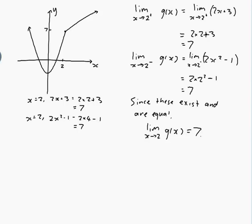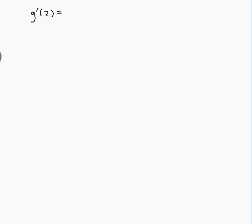Now let's look at g'(2). g'(2) is defined as a limit — the derivative is actually defined to be a limit. So g'(2) is equal to the limit as h approaches 0 of g(2 plus h) minus g(2), all over h. Because g is defined differently when we're above 2 or below 2, g(2 plus h) will be different depending on whether h is positive or negative. So we're going to have to do both sides separately.